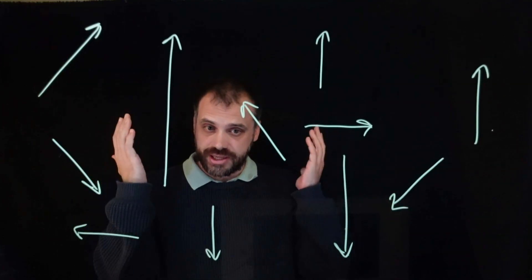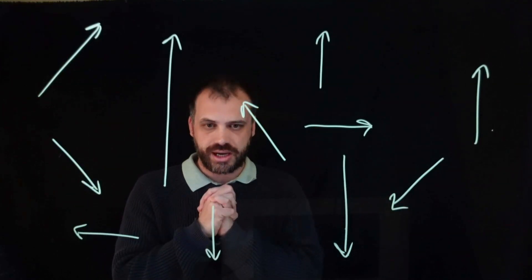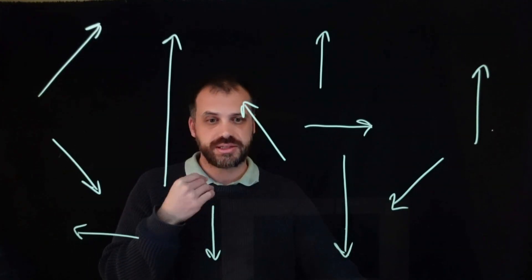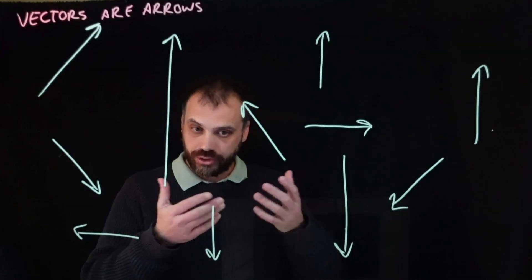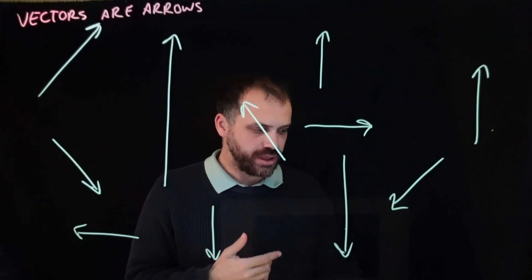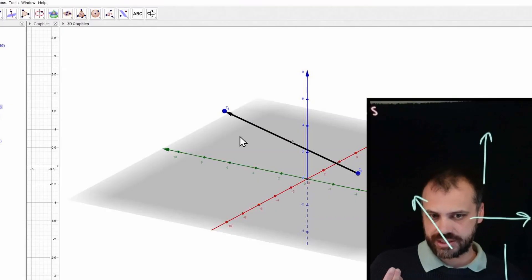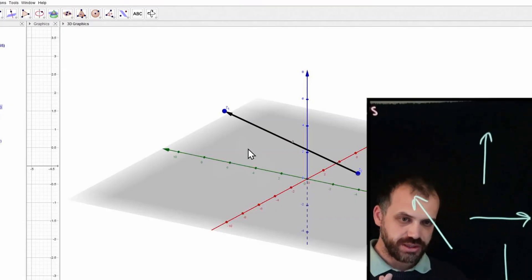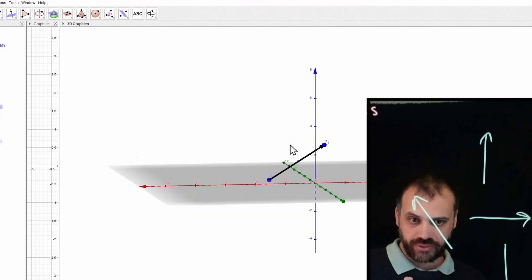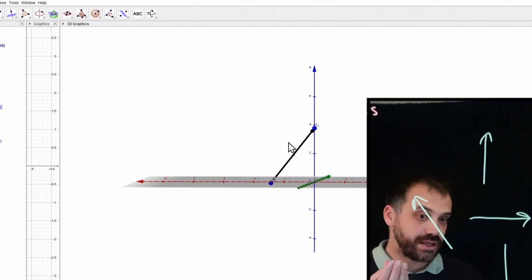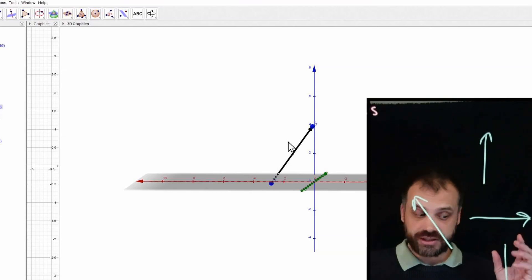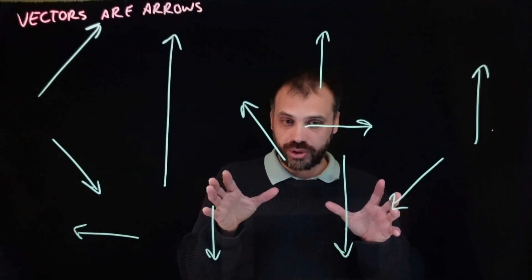It's time to start talking about vectors. Put very, very simply, vectors are arrows. So all of these are vectors. Now vectors can exist in two dimensions, but vectors can also exist in three dimensions.